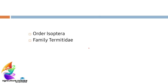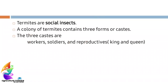Scientifically, termites belong to the order Isoptera and family Termitidae. Termites are said to be social insects because they live in colonies and they have different kinds of castes. A colony of termites contains three forms, that is three castes.